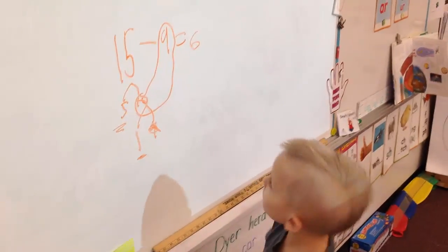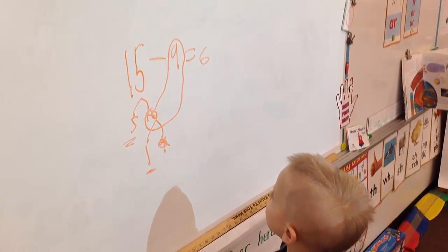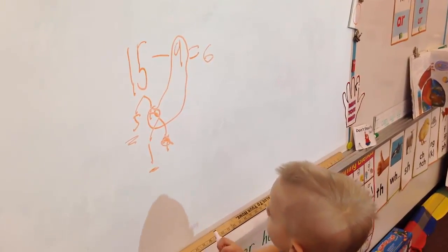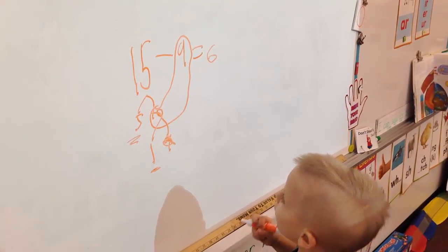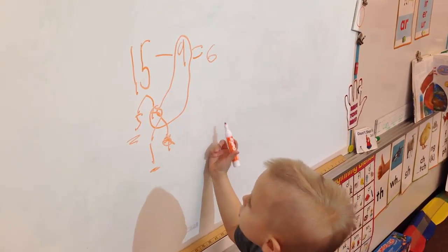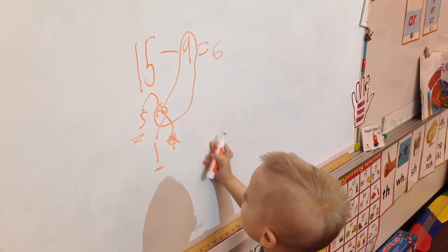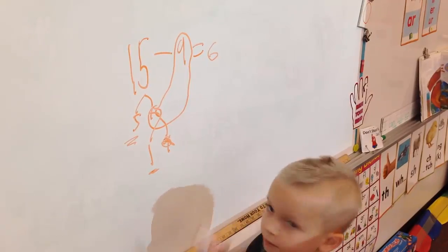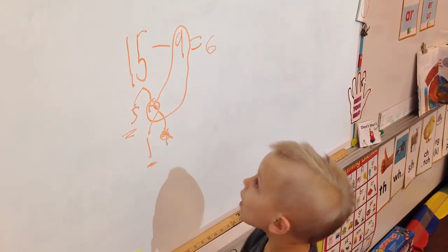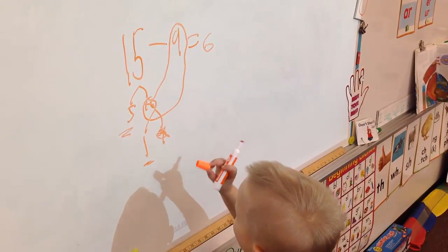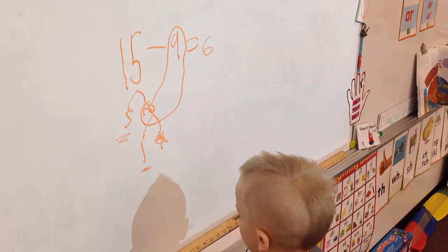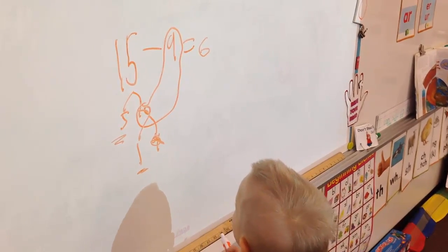You want to say the sentence for me? 15 minus 9 equals 6. And what did you do with the number bond? Can you talk about the number bond? I broke apart the 15 and I did 5 and 10. So why didn't you subtract 5 minus 9? Because if I took away 5, it would be... It doesn't work that way, right?